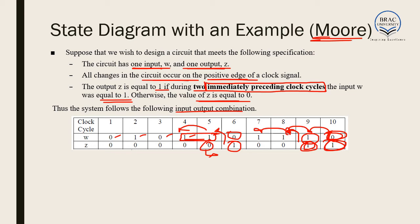To design any finite state machine, we can use a programming language like Verilog or VHDL, or we can design it using sequential logic circuits. The first step is to draw a state diagram. If the state diagram is correct, it is very easy to implement the machine in code or in logic circuits.